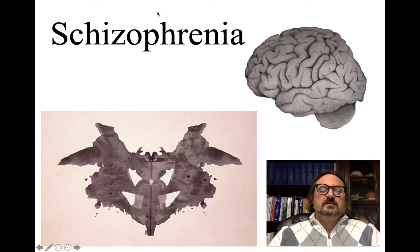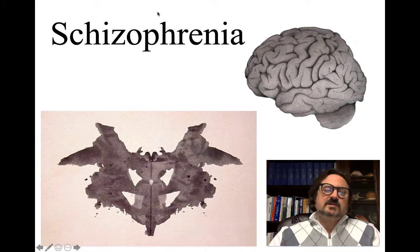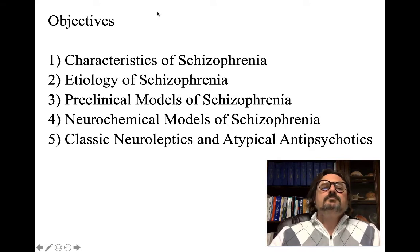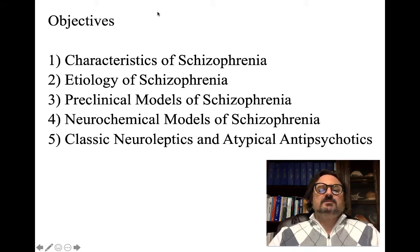Below is a Rorschach slide or plate. The Rorschach is an interesting tool — there have been a lot of problems with it, but one of its useful applications is diagnosing psychosis, and that's one reason it has endured in clinical psychology. We're going to talk about schizophrenia: its characteristics, etiology, preclinical and neurochemical models, and then neuroleptics and atypical antipsychotics and their efficacy.